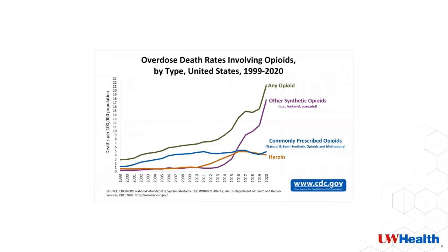Here is a visual depiction of the rise in overdose death rates because of opioids from 1999 to 2020. I want to draw your attention to the recent sharp spike we are seeing over the past few years because of synthetic opioids like fentanyl. I know we have all heard and seen things about overdose death rates getting worse, but this graph really puts things into perspective. It was pretty eye-opening for me when I found it.